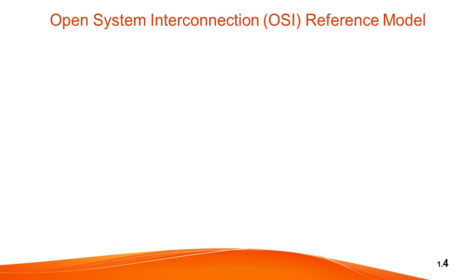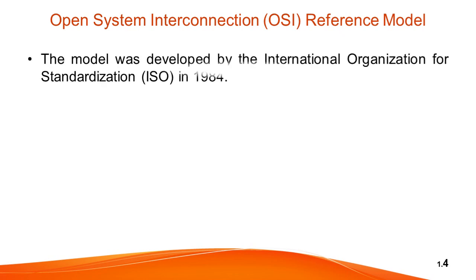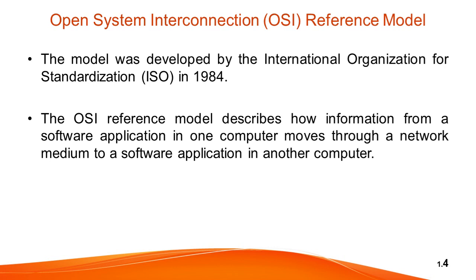Now let's start with the OSI reference model. As we know, the name stands for Open System Interconnection model. This OSI model was developed by the ISO — International Organization for Standardization — in 1984. The OSI reference model describes how information from a software application in one computer moves through a network medium to a software application in another computer. The OSI model is a conceptual model composed of 7 layers, each specifying particular network functions.